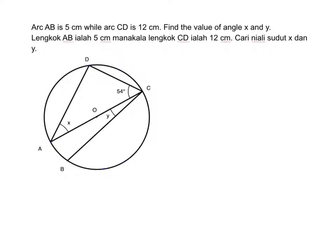Arc AB is 5 cm while arc CD is 12 cm. So here is 5, here is 12. Find the value of angle X and Y.